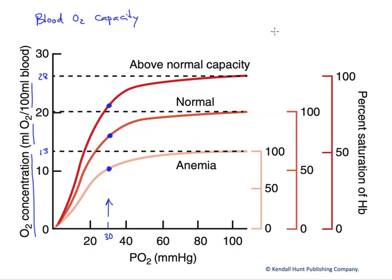It's essential that we have hemoglobin increasing that carrying capacity, as plasma alone would not carry enough oxygen for us to remain aerobic. We've already looked at hemoglobin's characteristics individually.